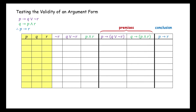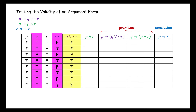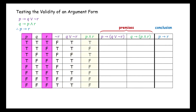In the first three columns, we use our typical pattern to set up the truth values for P, Q, and R. Next, we complete the not R column. Then we use the truth values in the first four columns to determine the truth values for the Q or not R column and the P and R column.